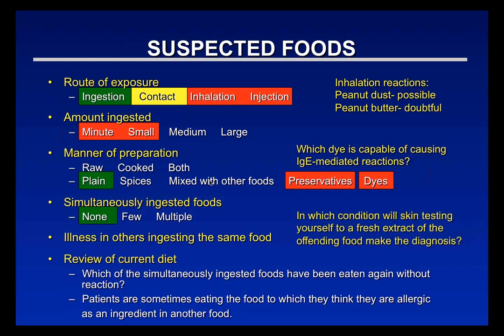There's a condition called scombrotoxic poisoning where you can skin test yourself with a fresh extract of the suspect fish. When tuna is held too long without proper refrigeration, it can be contaminated with Proteus bacteria that metabolize histidine in fish muscle into histamine. Eating it is like ingesting a large amount of histamine. A positive skin test to the fresh extract in someone not known to be fish-allergic makes the diagnosis.